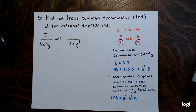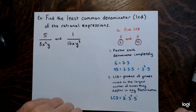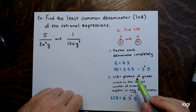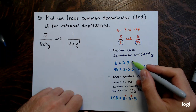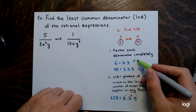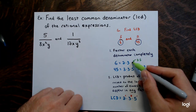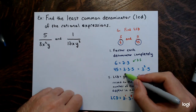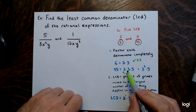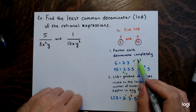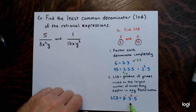Another way to think about it: take both factorizations and figure out what needs to be added to make them look the same. The factorization of 6 needs another 3 and a 5; the factorization of 45 needs a 2. Then both look like 2 times 3 times 3 times 5, which is exactly 2 times 3 squared times 5, or 90.